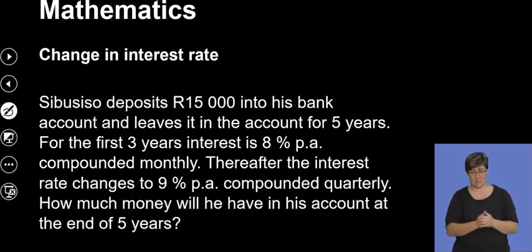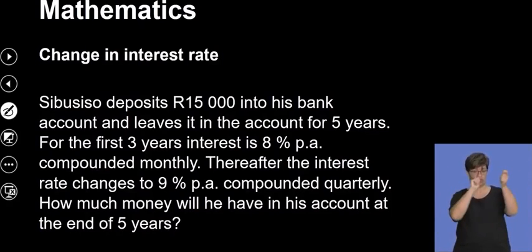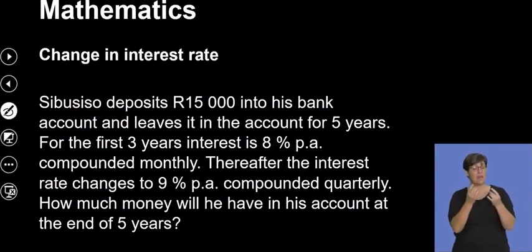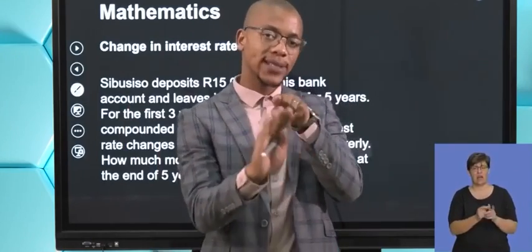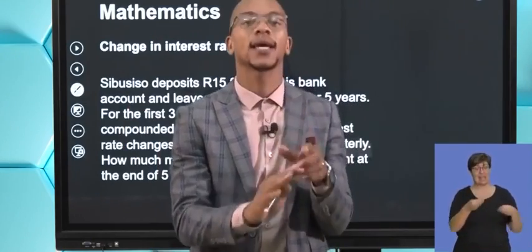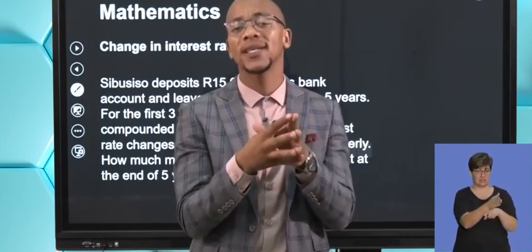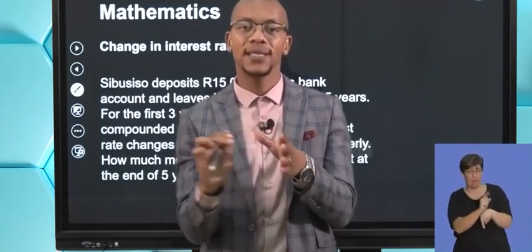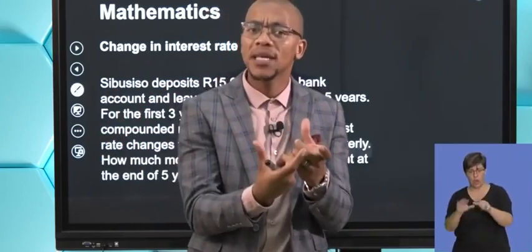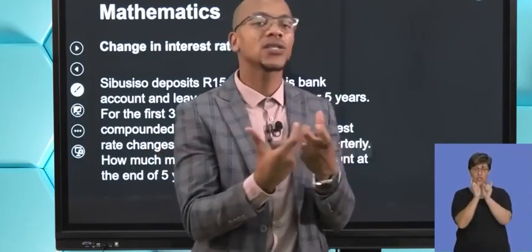We also have what we call a change in interest rate. When the interest rate changes on a number line, we normally show that using a wobble symbol, and write what the interest rate is at that point. This shows what the interest was and what it changed to, so you can track how your interest changed as you move forward or backward with your investment.